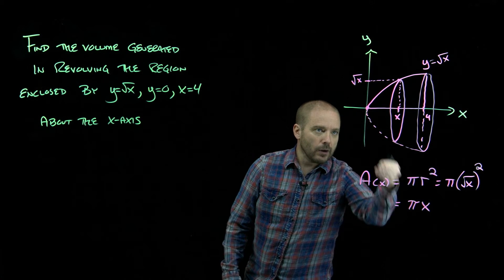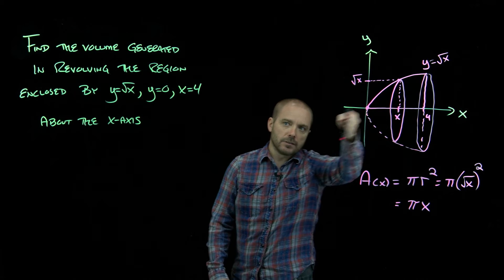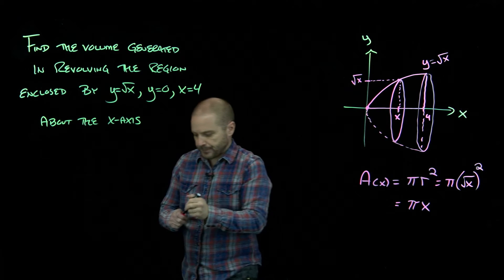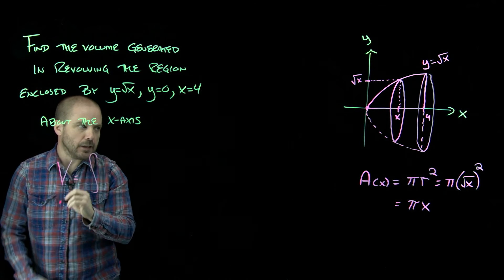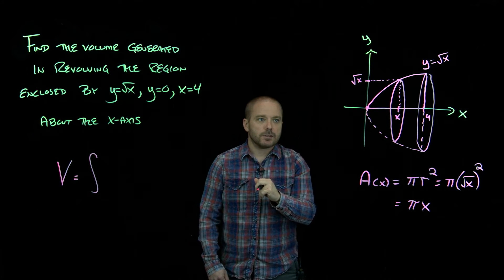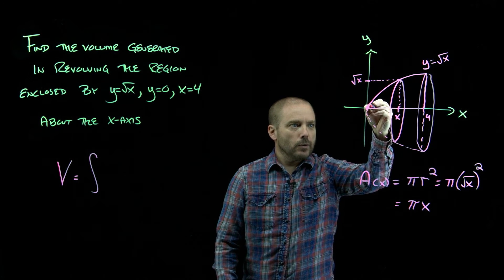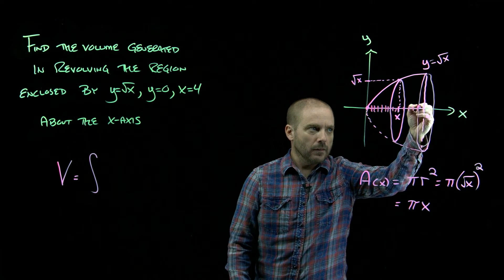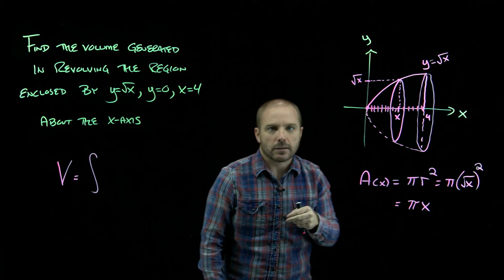So all we have to do now is integrate, which is adding up all those areas of all those slices to get the entire volume. So our volume is the integral. Now when you're trying to think about limits of integration, think about what you chopped. This region, if you were slicing it, you'd be slicing all the way from x equals 0 to x equals 4.